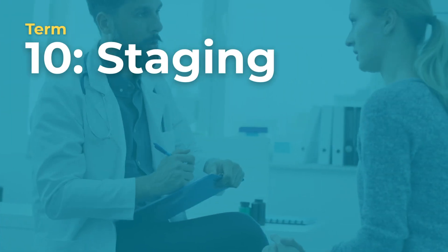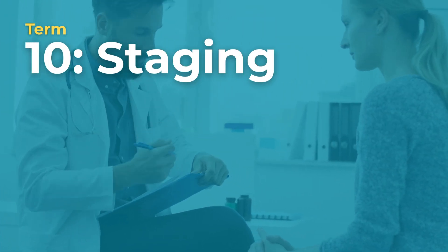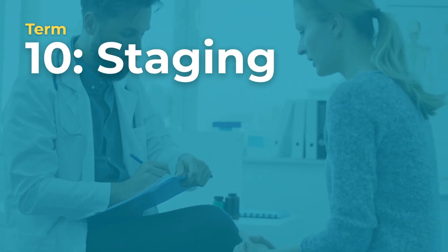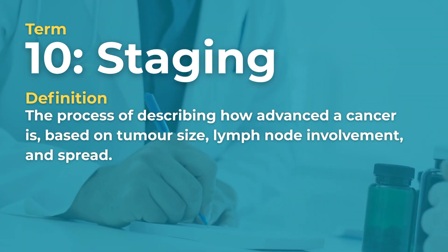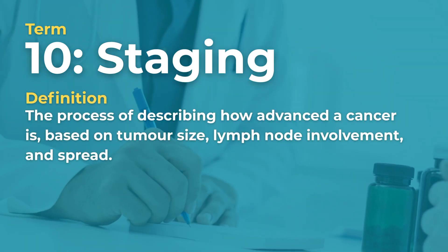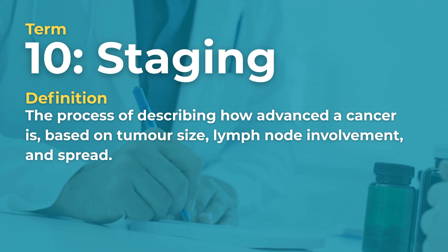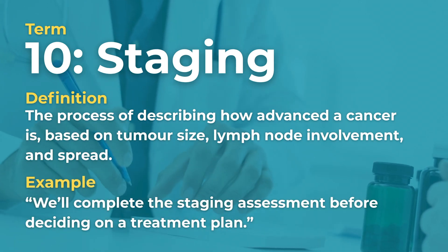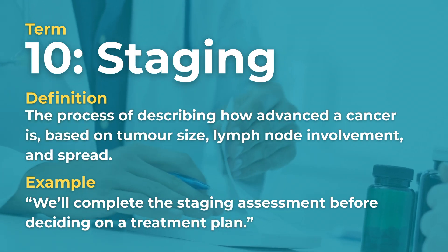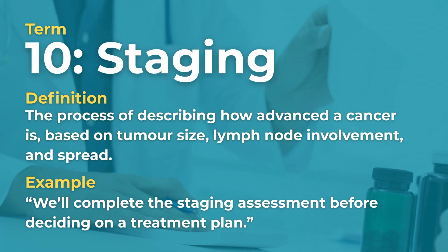Term number ten is staging. Staging is the process of describing how advanced a cancer is, based on tumour size, lymph node involvement and spread. Example: 'We'll complete the staging assessment before deciding on a treatment plan.'